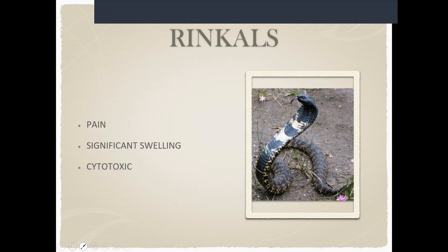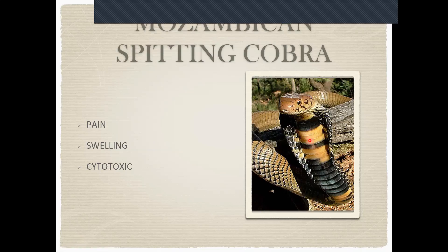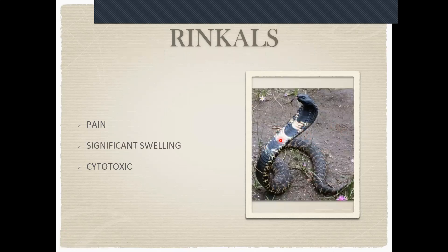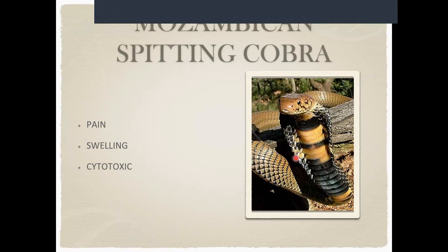The Mozambican spitting cobra is also very common, especially toward Empangeni and that area. It's also cytotoxic — pain and swelling. The spitting cobra's first line of defense is spitting, and it normally aims for your eyes, which I'll discuss later. It can bite you as well. You can tell it apart from the Rinkhals by color: the Rinkhals tends to be black with white-to-yellow markings, while the spitting cobra is more golden with black stripes.